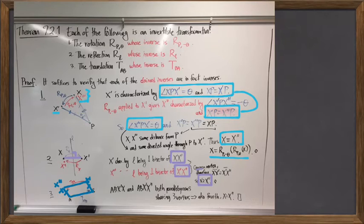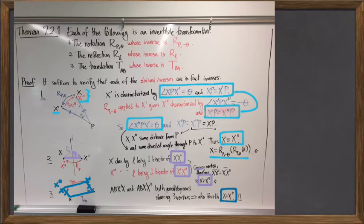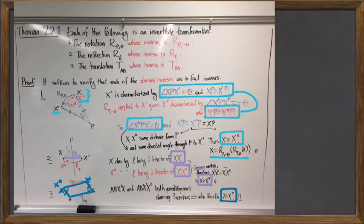We end up with two parallelograms that have three of their vertices in common, which forces them to have their fourth vertex in common as well, so X equals X double prime. Each of these transformations is invertible, and we can say specifically what its inverse is. These are the only building blocks of isometries that exist — the only ones we need to care about.